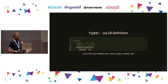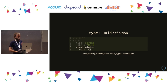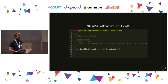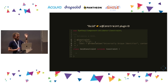In the constraints key you see uppercase U, lowercase U, I, D — 'Uuid' — referring to the ID of a constraint plugin. We went from a schema YAML file where we define types, and now we're saying those types need to be validated by constraints. The constraints are defined by a plugin ID. That's the connection between the schema and the validation logic.